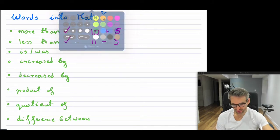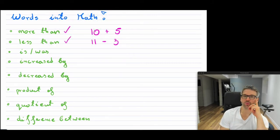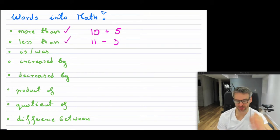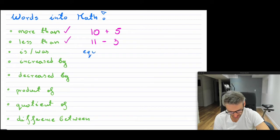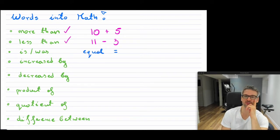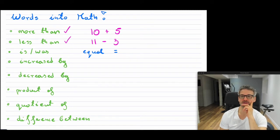Now the words "is," "was," or "will be" — these always mean equal. So this basically means equals in math. When you see the words "is," "was," or "will be," that's the equal sign.